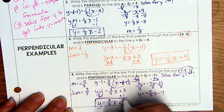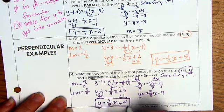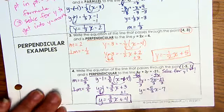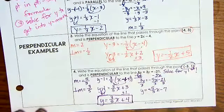And we get y equals 3 fifths x plus 4. This is the equation that is perpendicular to the one in standard form right here. Okay. You're going to finish the notes and you'll have a great day. Bye.